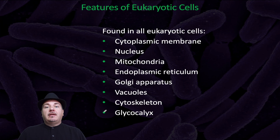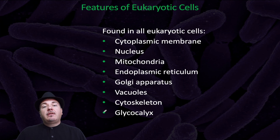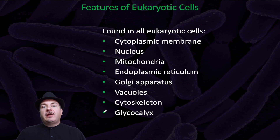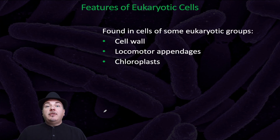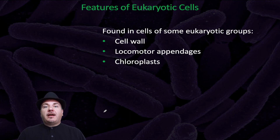Now there are some features that all eukaryotic cells have. All eukaryotic cells have a cytoplasmic or plasma membrane. They all have a nucleus, mitochondria, endoplasmic reticulum, Golgi apparatus, vacuoles, cytoplasm, and glycocalyx. Some eukaryotic cells, but not all, have a cell wall, locomotor appendages, and chloroplasts.